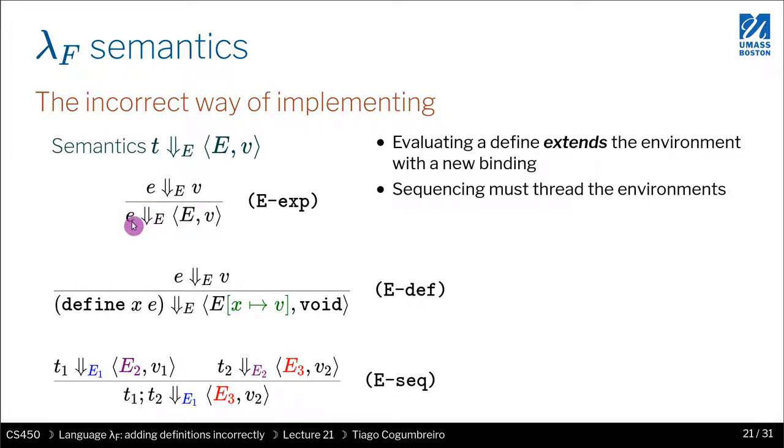So evaluating an expression by passing it to the eval term should return a pair, right? This pair that has the new environment and the value obtained by evaluating the expression E. Okay, so the next rule we are specifying what happens when we meet a define. So if the input expression, the term input term, is not an expression but instead if it is a define, what do we do?